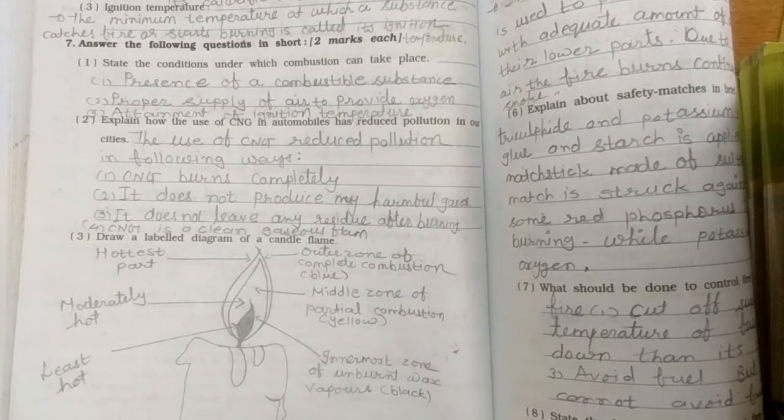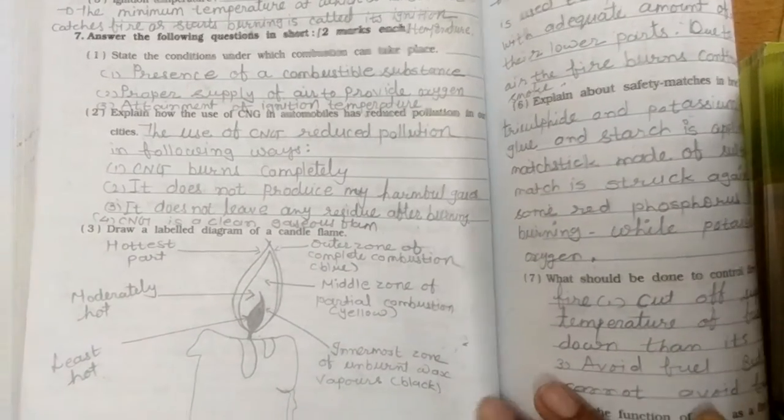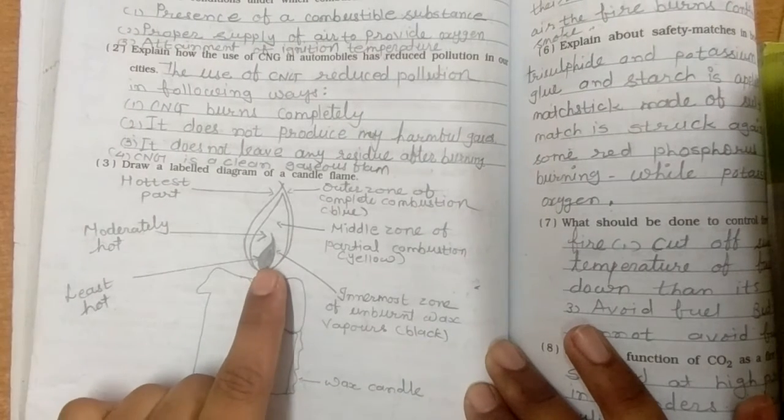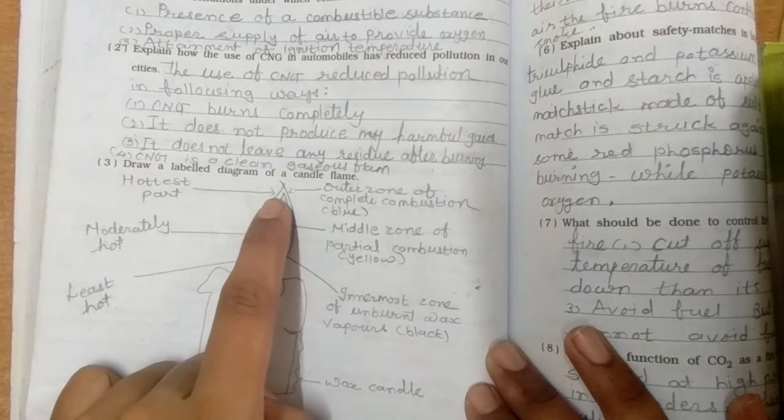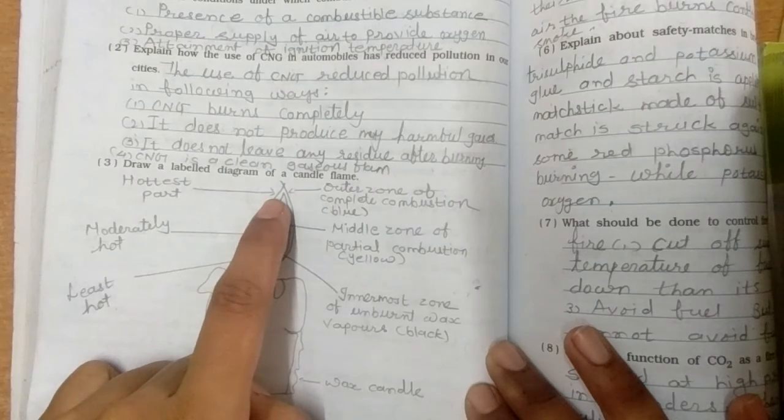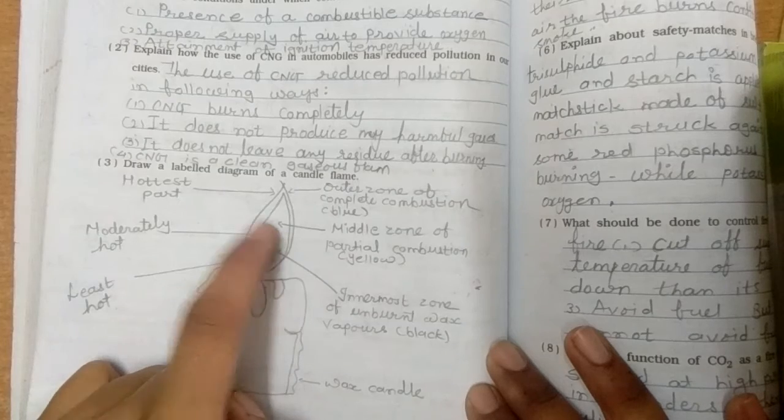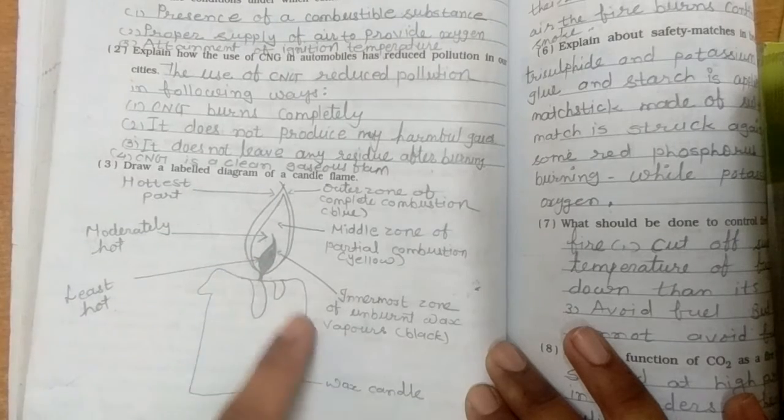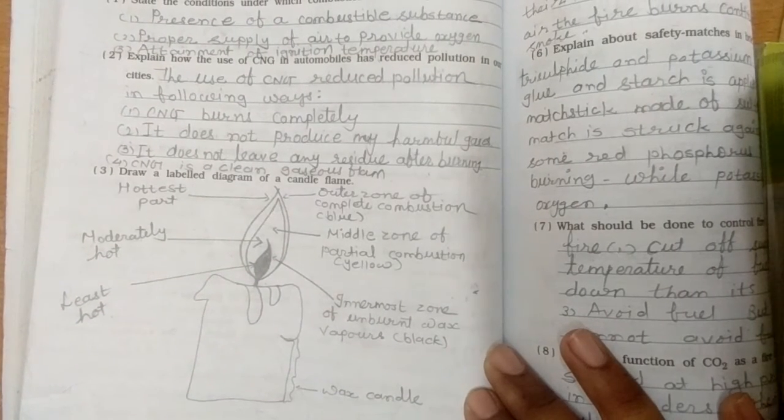CNG brought all the way to control the level. Diagram of candle flame. I have drawn it in notebook. I will draw it in this way. You can draw it in this one. The least hot, hot, hot horizontally. And outside, the outer part of air is hot, and in this one partial combustion. And this innermost zone is unburned wax vapor. And this is wax candle which when burnt, the wax will melt.